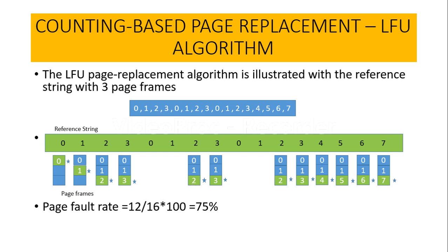Again, the requests for pages 0 and 1 will not result in replacement or page fault because those two pages are already available in the page frames. When there is a request for page 2 again, we replace the page having the smallest count — page 3 — with page 2. Similarly, when there is a request for page 3, we replace page 2 with page 3 since page 2 has the lowest count compared to pages 0 and 1.